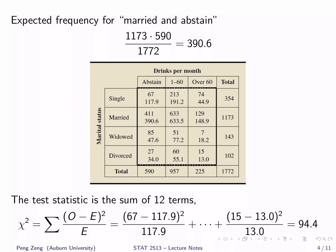Applying the formula for expected frequencies to each cell of the table, we get this table. For each cell, there are two numbers: the first number is the observed frequency, and the second number is the expected frequency. For example, the expected frequency for married and abstain is 1,173 times 590 divided by 1,772, which equals 390.6.